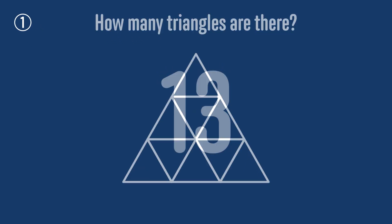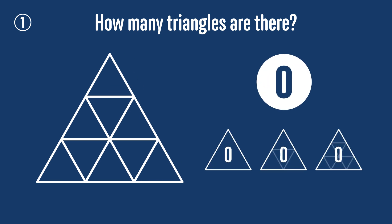To make sure we've got them all, we should always try to find a systematic approach. So we start by counting all of the small triangles and see there are nine of them in total. Then we look at these medium-sized triangles and see there are exactly three.